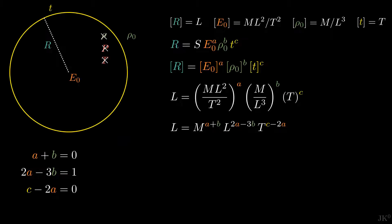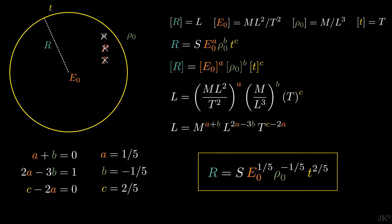Solving the system of equations, we find that the exponents are 1 fifth, minus 1 fifth, and 2 fifths. Plugging these results in the proposed formula, the radius is given by the constant s, the energy of the explosion to the 1 fifth, the ambient density to the minus 1 fifth, and time to the 2 fifths.